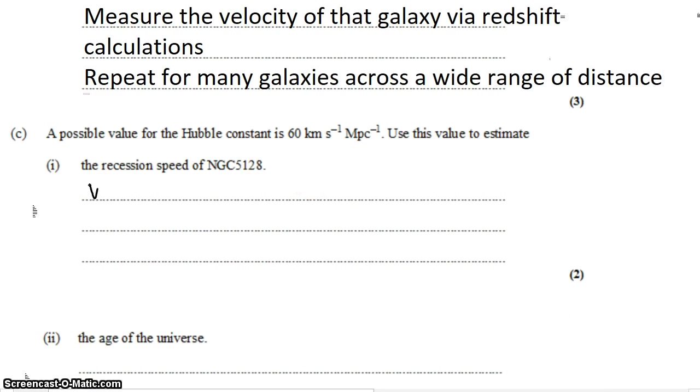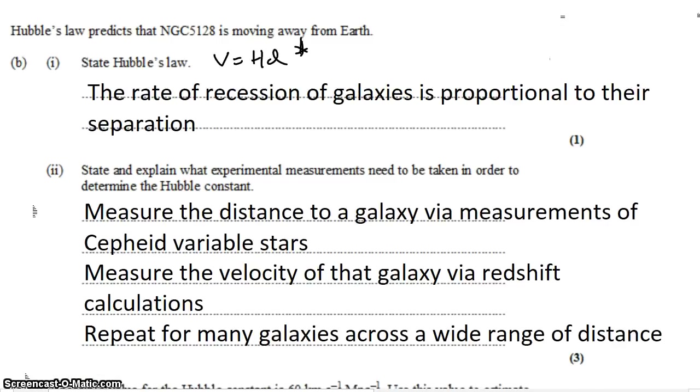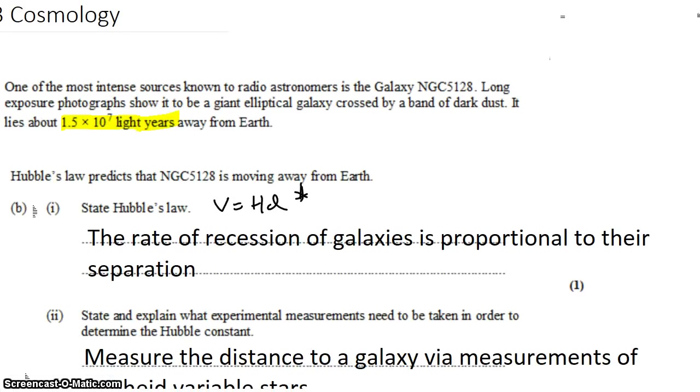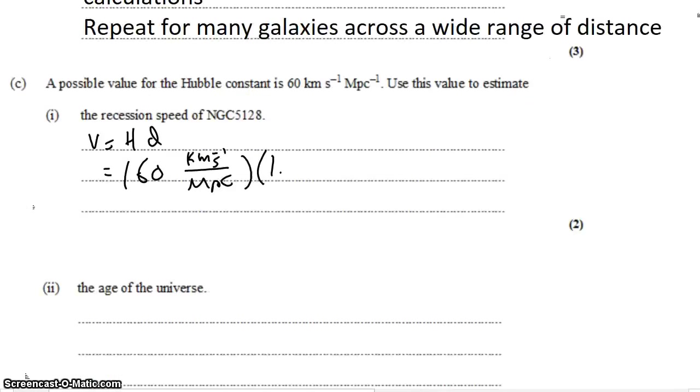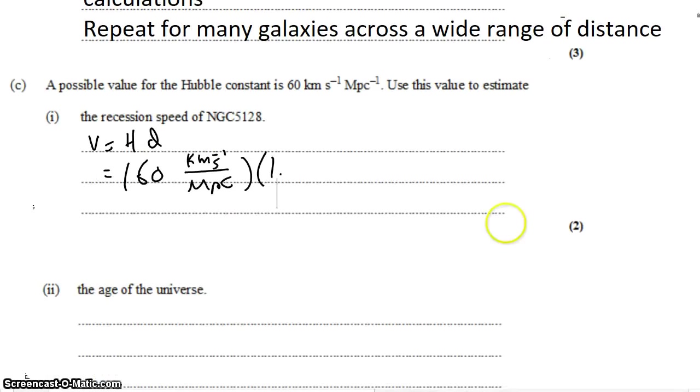We know that the velocity is equal to the Hubble constant times the separation. So that's 60 kilometers per second per megaparsec and the distance to the galaxy, which was given to us, 1.5 times 10 to the 7 light years.